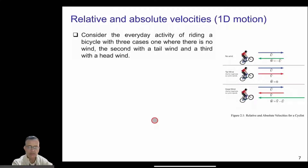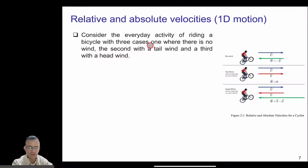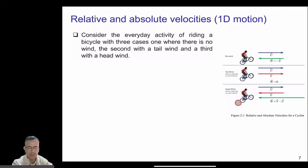Before going into the analysis of turbines, it is important to understand relative and absolute velocities, as we will use these in turbine calculations. Consider an everyday example of riding a bicycle with three cases: in the first case there is no wind; in the second case there is a tailwind in the direction of the bicycle; and in the third case there is a headwind opposite to the direction of the bike.